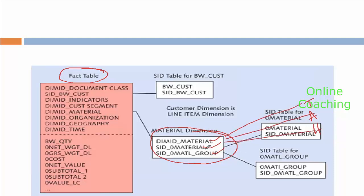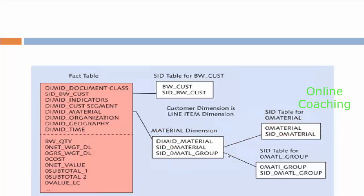The dimension will connect to three tables by using SID. Do you remember that when I loaded master data, there was a SID table? I told you that whenever we talk about info cube, we will talk about SID table. So that SID table is used here now. Any dimension doesn't store the data inside the dimension — rather it will store only IDs, separating the data: one for attributes, one for text data, one for hierarchy data, because of SID.